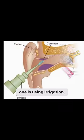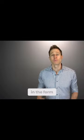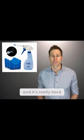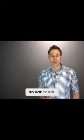And the third one is using irrigation, which is basically flushing earwax out of your ears. Most irrigation systems come in the form of handheld water bottles, and it's really hard to get the amount of pressure necessary to dislodge earwax from an ear canal.